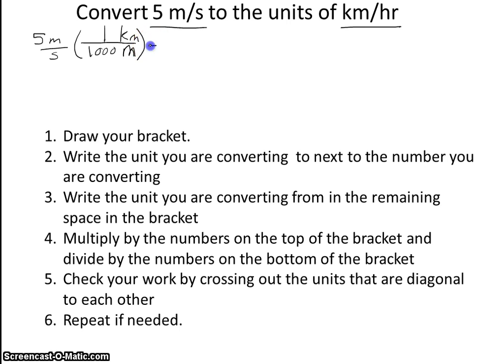And so if I were to multiply this out, remember that I multiply the top by the top, and I divide by the bottom. So 5 times 1 divided by 1,000 gives me 0.005. And my units I can find by canceling out the units. So remember, we cross out the units that are across from each other. And I'm left with kilometers on the top and seconds on the bottom.